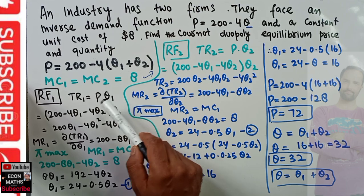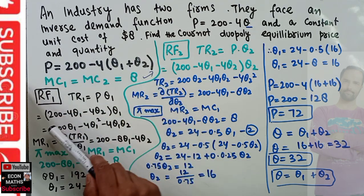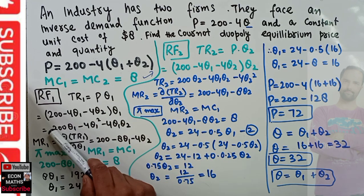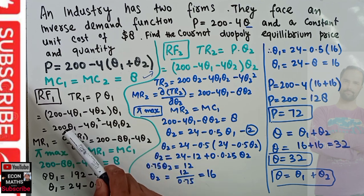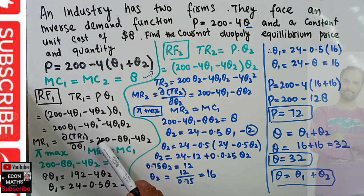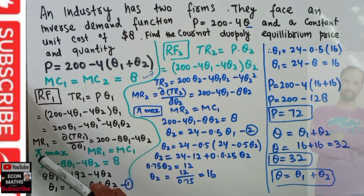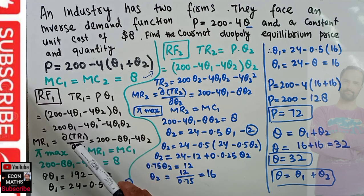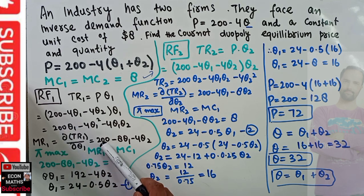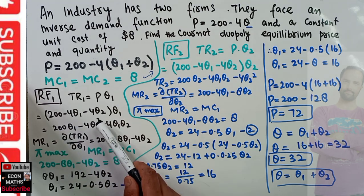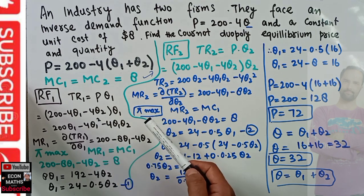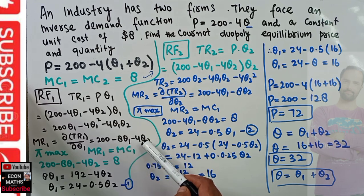Total revenue of firm 1 equals price times output of firm 1: (200 minus 4Q1 minus 4Q2) multiplied by Q1. This gives TR1 = 200Q1 minus 4Q1² minus 4Q1·Q2. The marginal revenue of firm 1 is the partial derivative of TR1 with respect to Q1, which gives MR1 = 200 minus 8Q1 minus 4Q2.